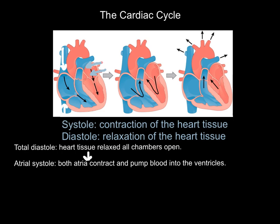The second stage of the cardiac cycle is atrial systole. Both atria — the top two chambers — then contract, i.e. systole, and pump the blood down into the ventricles, following the black arrows on the diagram. You want the blood to enter the top two chambers of the heart and then be forced into the bottom two chambers. So: total diastole, all chambers open, blood pours into the atria. Then atrial systole — when they're full of blood, they squeeze it down into the ventricles.